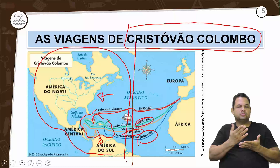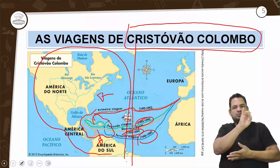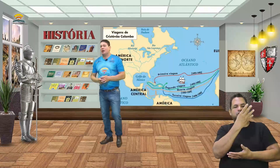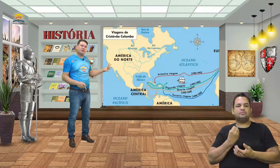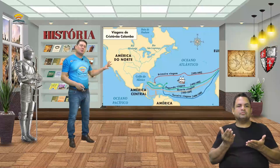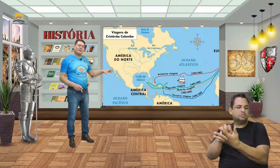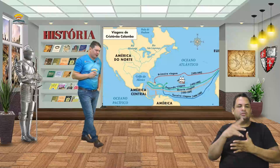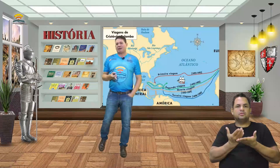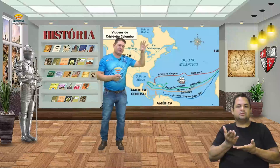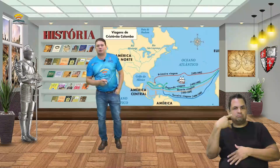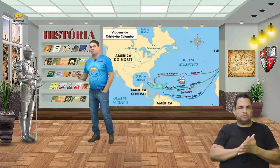Observamos as viagens de Cristóvão Colombo que vão fazer a conquista da América para os espanhóis. Por isso falamos em colonização da América Espanhola: tivemos a parte da América pertencente à Espanha e a parte pertencente a Portugal, que vai se transformar no Brasil. Depois os portugueses dominaram a África e a Ásia, até pelo Tratado de Tordesilhas.